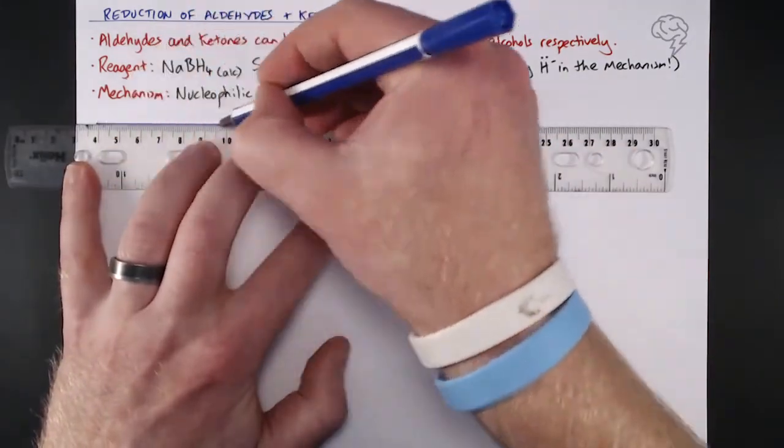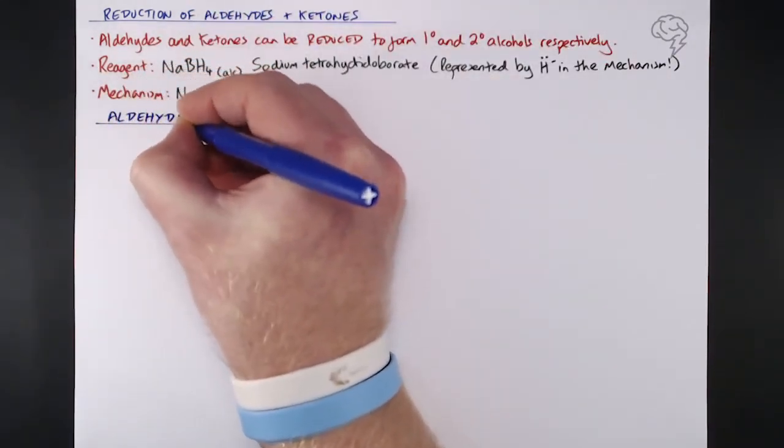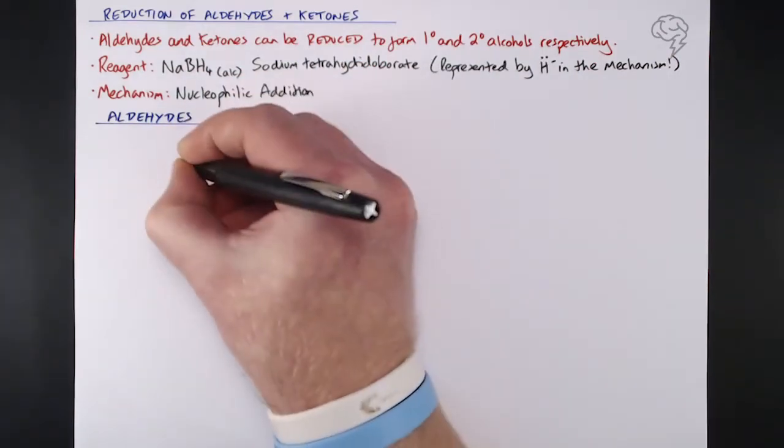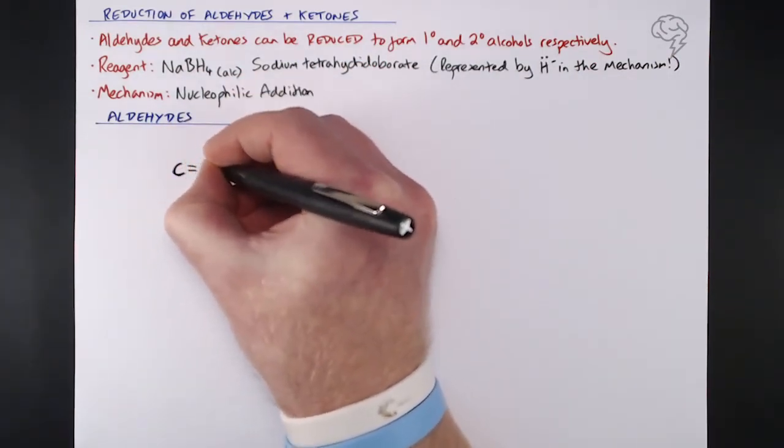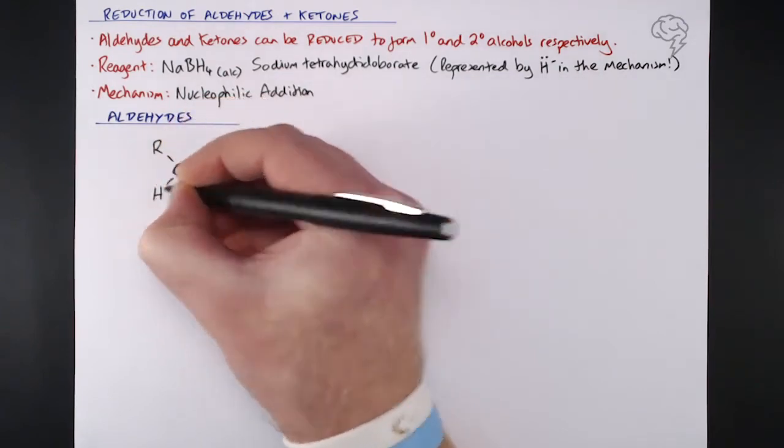Let's take a look at aldehydes first. With aldehydes we're expecting to reduce this molecule back to a primary alcohol. We're going to set out our stall like we normally would for a mechanism - nice and big, nice and clear, showing this carbonyl group. That's what we're focusing on.